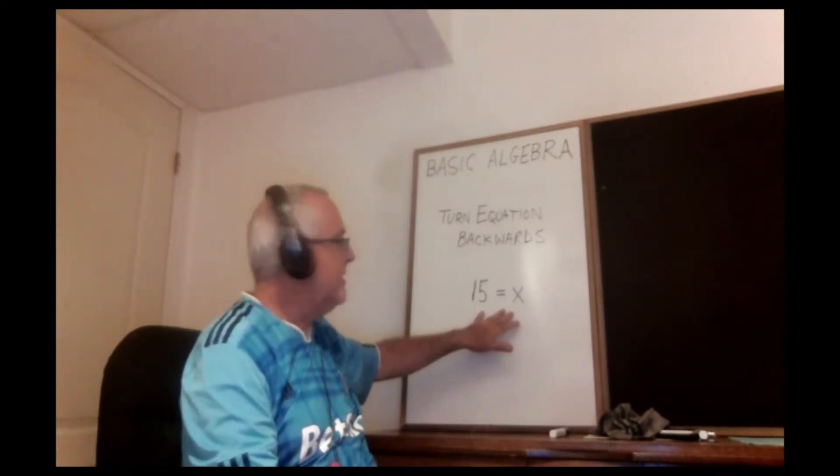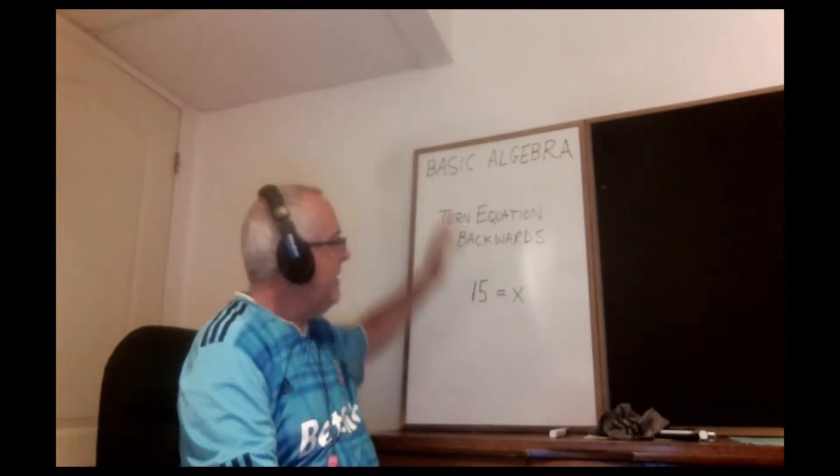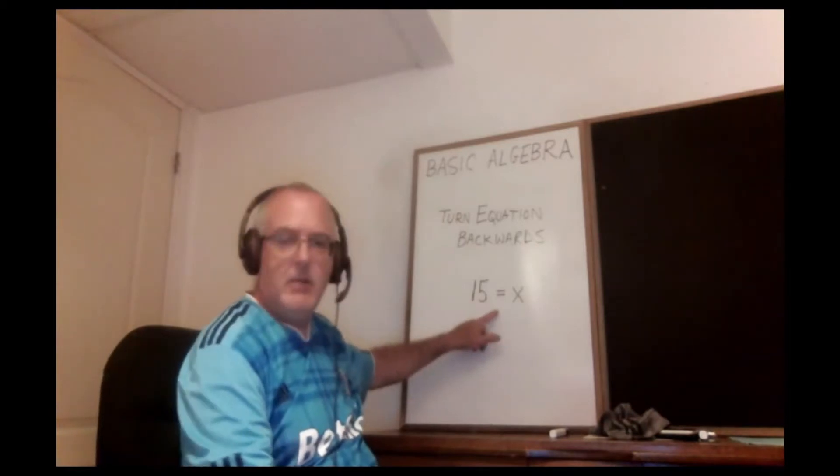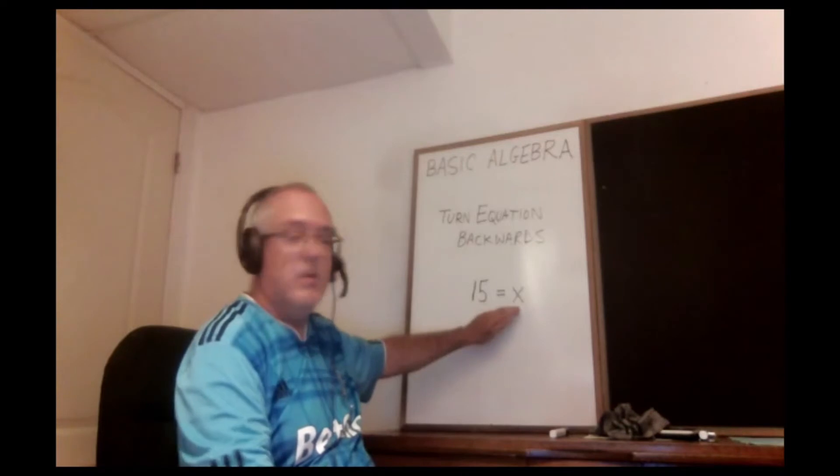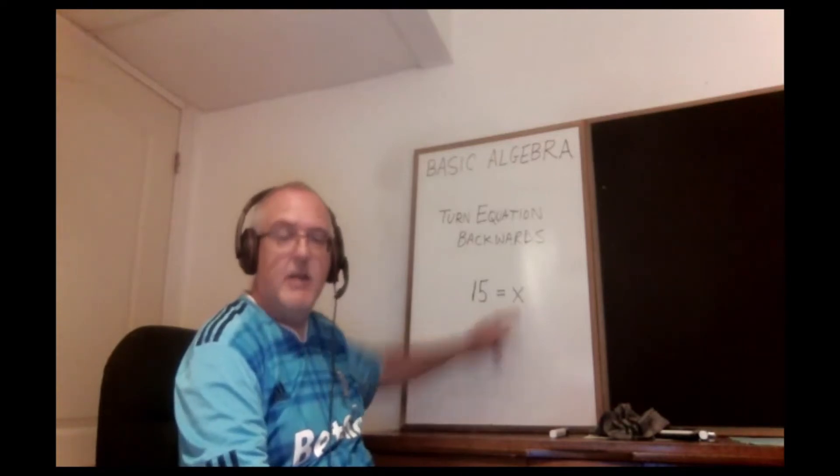We like to say x equals 15, but at the end of my simplification I ended up with 15 equals x. This happens sometimes because sometimes the variable is on the right side of the equal sign, and it's nothing to be afraid of.